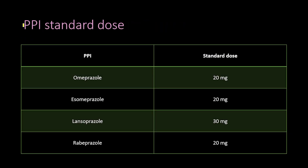The proton pump inhibitor standard doses are: omeprazole 20 mg, esomeprazole 20 mg, lansoprazole 30 mg, and rabeprazole 20 mg. When we say 'double the standard dose,' it means this dose multiplied by two — so for omeprazole, the double standard dose is 40 milligrams.